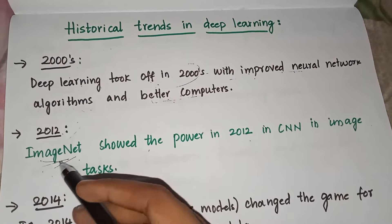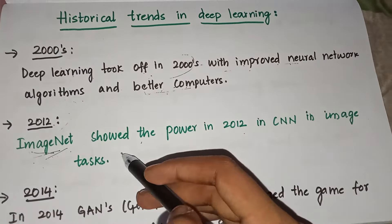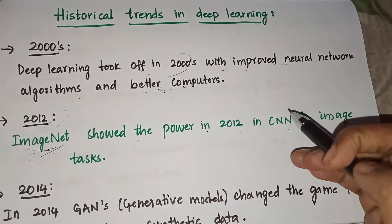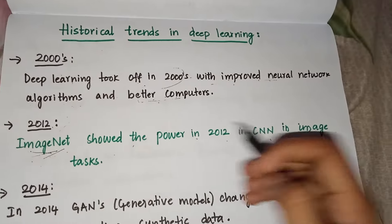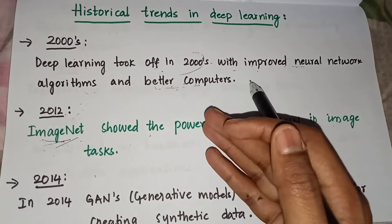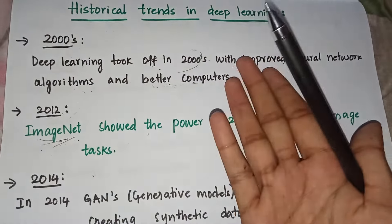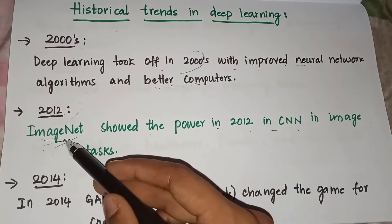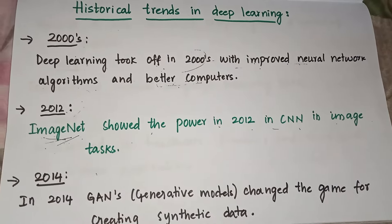Next, in 2012, we got ImageNet, which showed the power of CNNs — convolutional neural networks — in image tasks. For whatever image processing was needed, we used ImageNet.